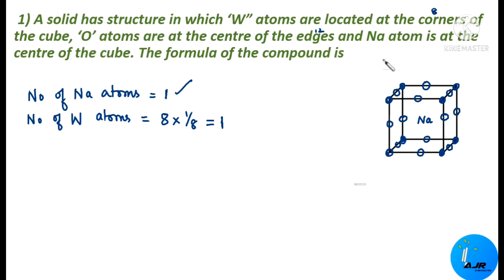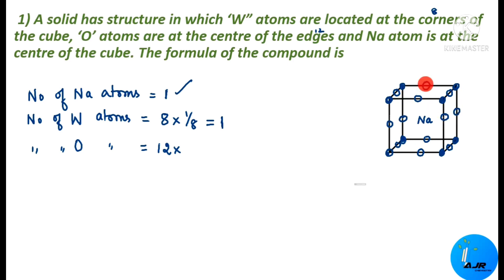Oxygen is present at the center of all 12 edges. The atom present at the center of an edge is shared by four other unit cells, so the contribution of each edge-centered atom is 1/4. Since there are 12 edge atoms, the total contribution is 12 × 1/4 = 3. Oxygen contribution = 3.